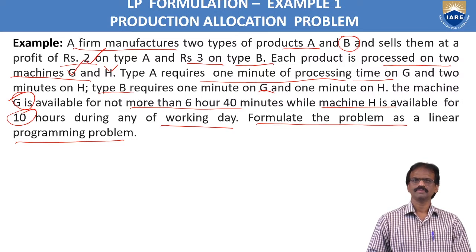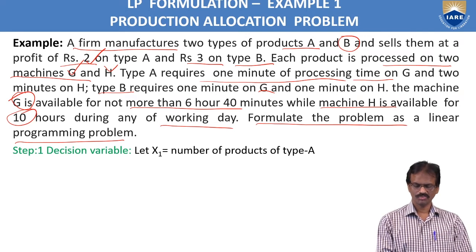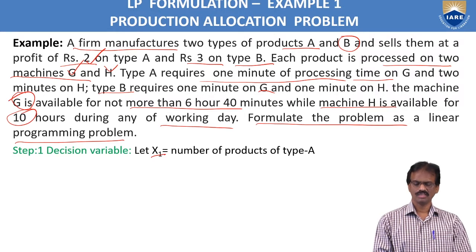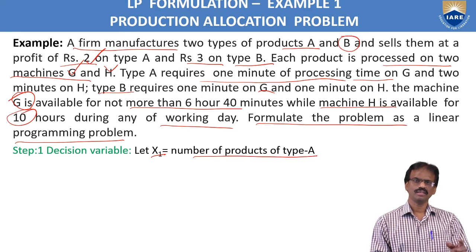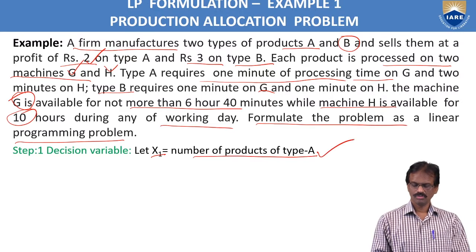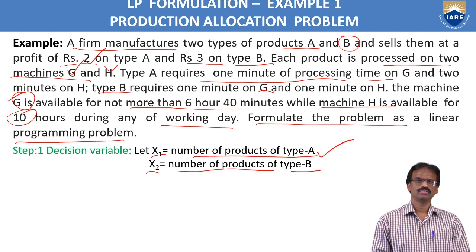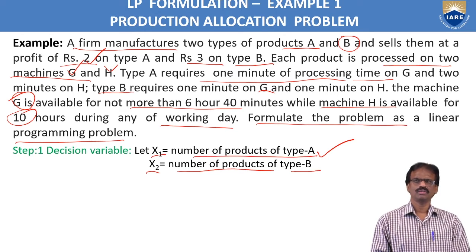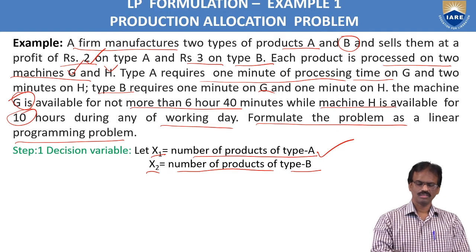We will see the steps one by one. First, the decision variables: let x1 be the number of products of type A manufactured in that company on a particular day. Let x2 be the number of products of type B manufactured per day. We have to calculate these values at the optimal level, considering all the constraints given in the problem.